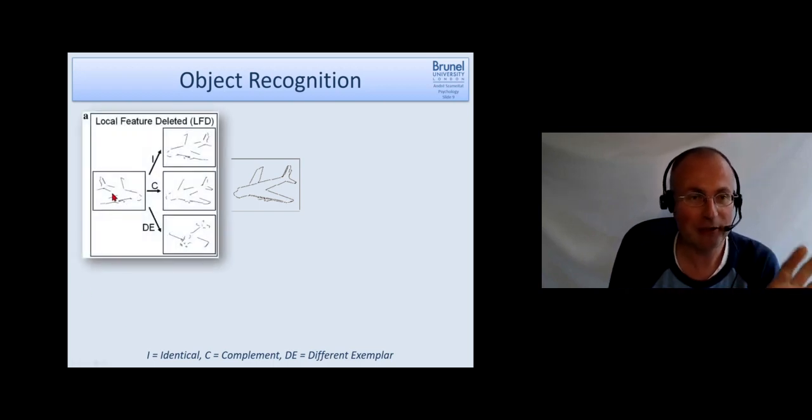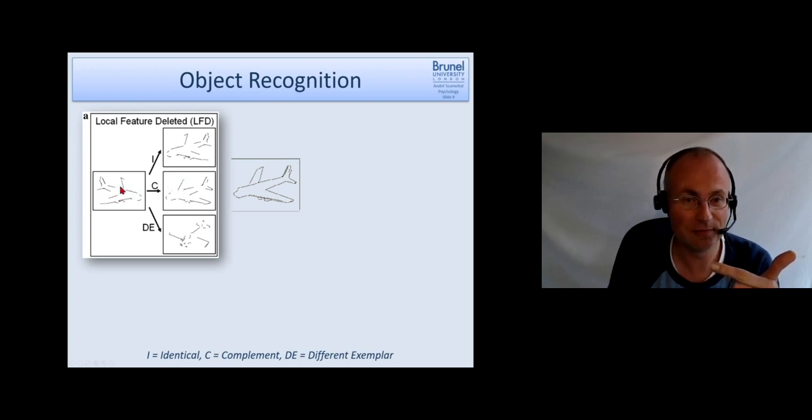Okay, so let's have a look at the different conditions he used to support the idea that we represent objects in the form of geons. And the first experimental condition he used is the following. So this is an example of the first stimulus they see, the prime. And this can be followed either by this, by that or by this. So three different conditions here. And the first one is it's identical. So it's exactly this one, just mirror reversed. C stands for complement. That means this image is A, mirror reversed and B, it shows all the lines which have been removed here. So if you mirror reversed that and move those two over each other, they come up to this. And DE is different exemplar. So this is just a different plane.